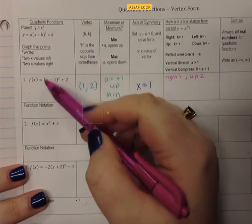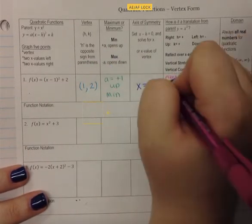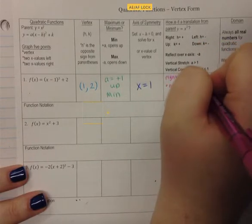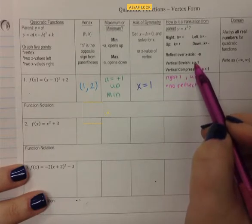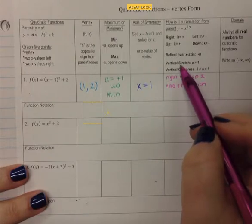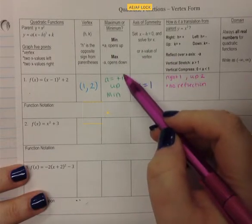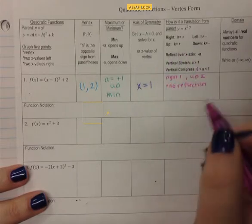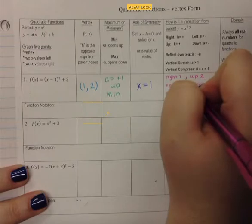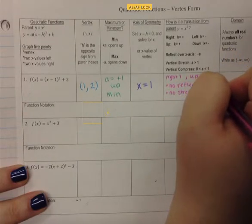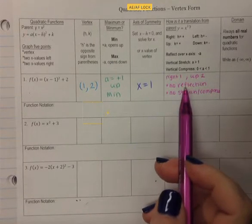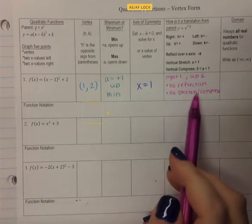Since a is not negative, there is no reflection. If a is greater than 1 or smaller than 1, there will be a stretch or compression. But since a is equal to just 1, that means there is no stretch or compression — no vertical stretch or compression.